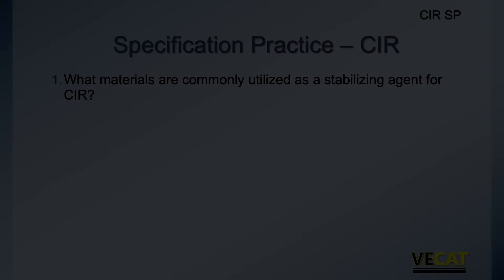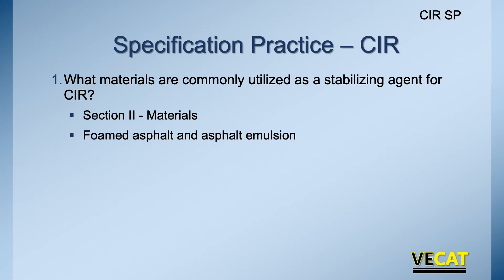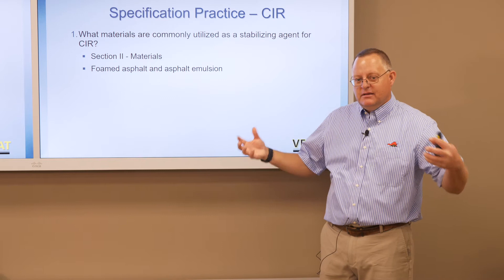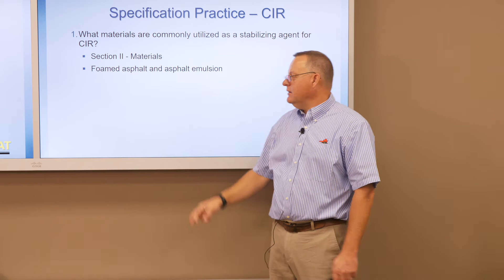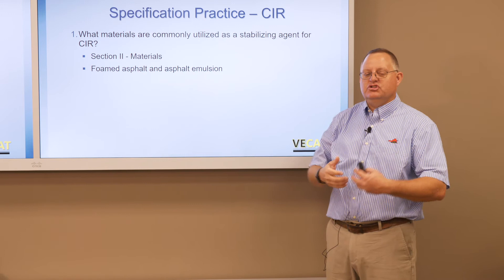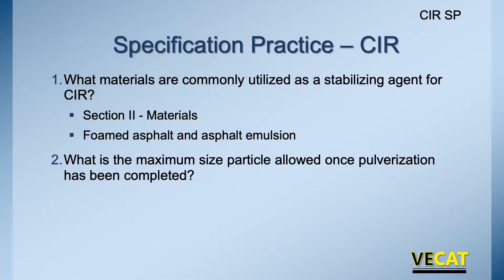For the first question — what materials are commonly used — in Section 2 of the special provision we see foam asphalt and emulsified asphalt. Foam asphalt is a neat, non-modified asphalt binder combined with a small amount of water that causes it to foam, expand, and coat the particles. Asphalt emulsion is water and liquid asphalt mixed in proper proportions with modifiers, injected into the cold in place recycler housing to coat and bind the stabilized layer.